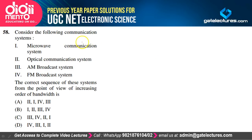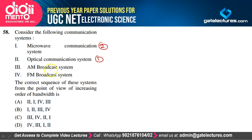Communication systems in increasing order of bandwidth: AM broadcast (least), FM broadcast, microwave communication, optical communication (most bandwidth). Option A satisfies our explanation.